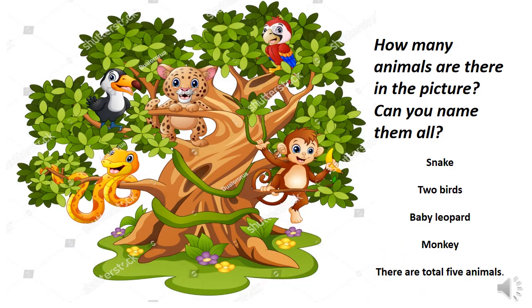Wow, what a huge tree it is! Do you know the meaning of the word 'huge'? It means very big. So the tree is very big and huge. It has so many animals. Can you name them all? We have a snake here. Two birds are here on the tree. One baby leopard is here. A monkey is also here. So total how many animals are there on the tree? There are total five animals. Very good, children!